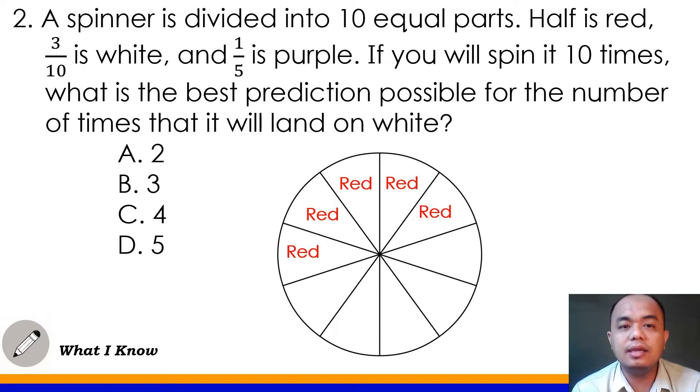And then 3 tenth is white. Meaning sa sampu, tatlo lang ang white. So white. 1, 2, and then 3. And then 1 fifth is purple. So 1 fifth or 2 ten. Dalawang parts out of 10 parts or that's 1 fifth. So purple daw ang kulay. Yan. Dalawa yung purple ng ating spinner.